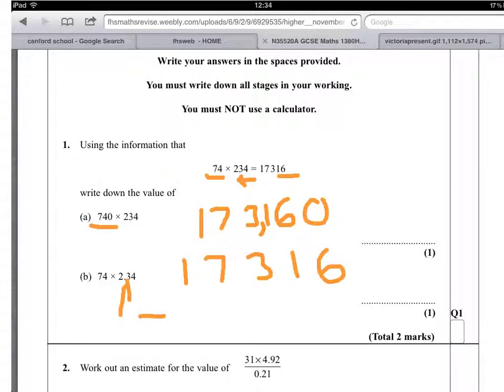Because the decimal point is moved across two places, we'll do the same here. And the answer is 173.16. And that is two marks, getting you started on your higher exam paper to a good start.